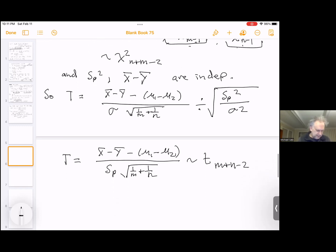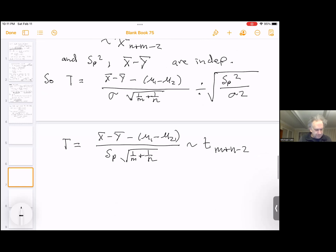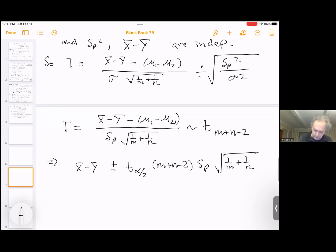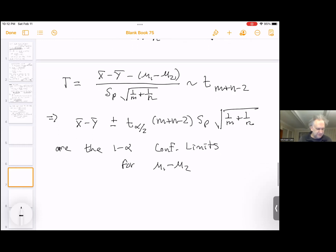Which is t distributed with m plus n minus 2 degrees of freedom, and we have our pivotal quantity that we can use to find confidence intervals. So this implies then that x bar minus y bar, that's our point estimator, plus or minus t alpha over 2, m plus n minus 2 times sp square root 1 over m plus 1 over n are the 1 minus alpha confidence limits for mu1 minus mu2, the difference in the population mean.